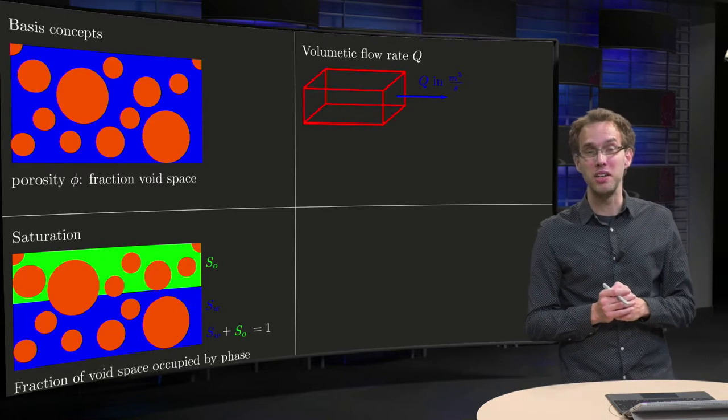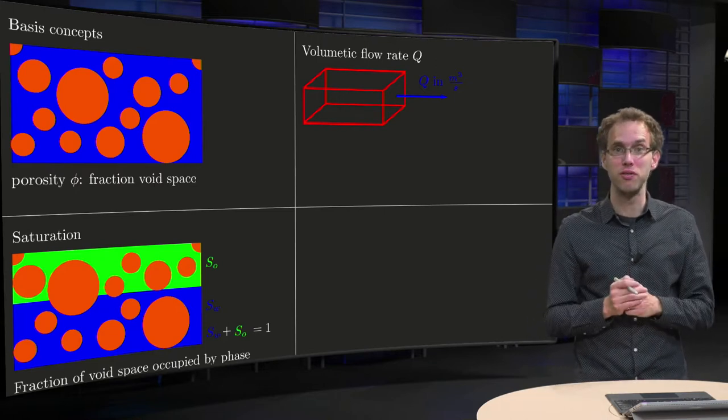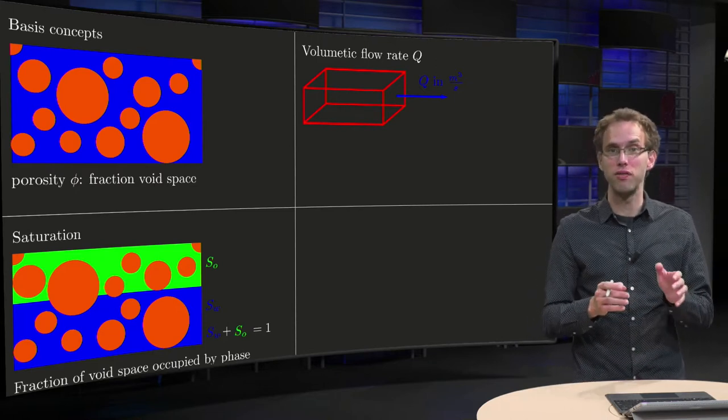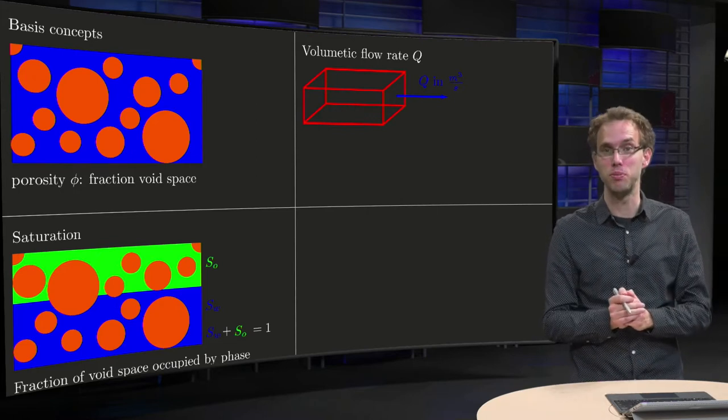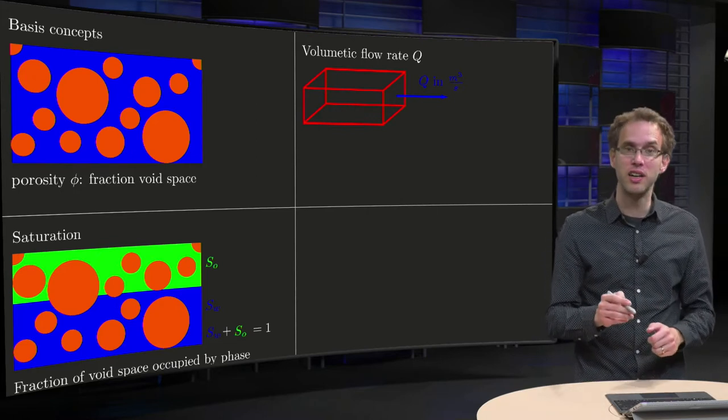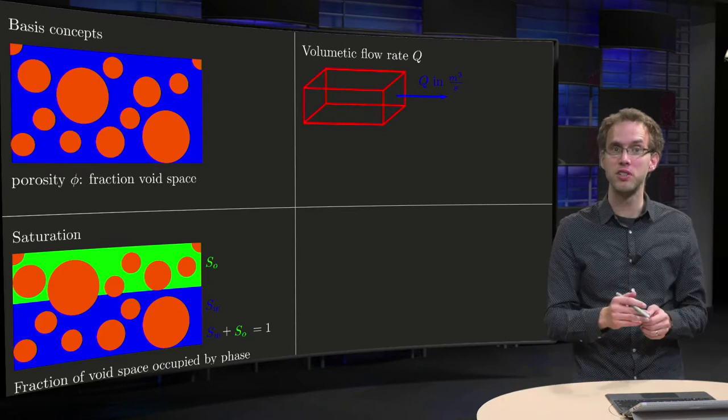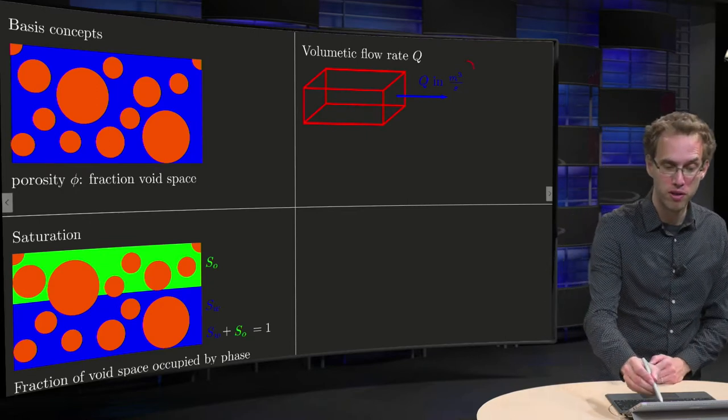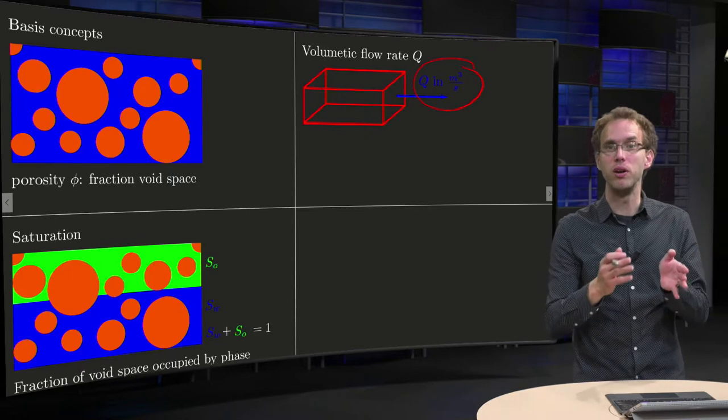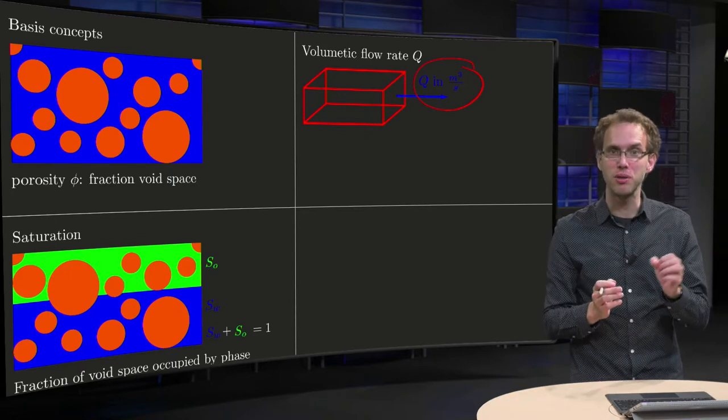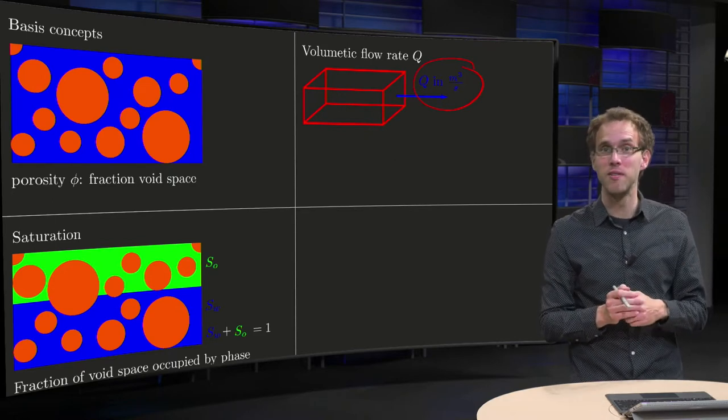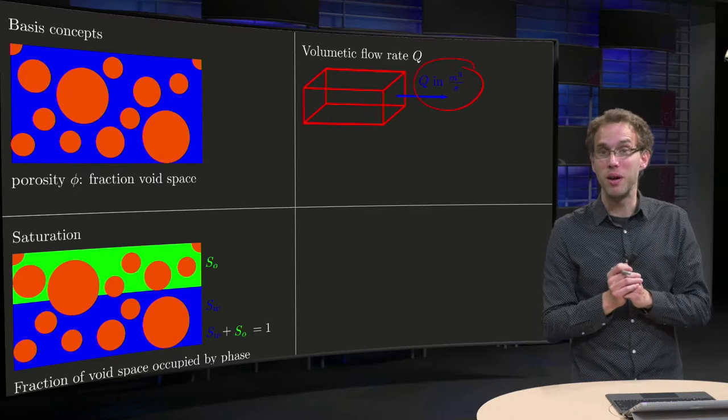Then we have to take a look into velocities. First we look into volumetric flow rates. It's often very hard to look what's happening inside a porous medium, but what you can see is, for example in an experiment, the total amount of fluid flowing out, so Q in meter cube per second, that's something you can measure easily. So that's what's called the volumetric flow rate.